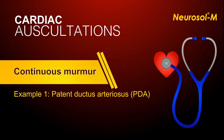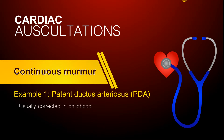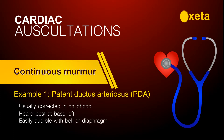Patent ductus arteriosus (PDA) is the classical example of this murmur. This condition is usually corrected in childhood. It is heard best at the base left and is usually easily audible with the bell or diaphragm.